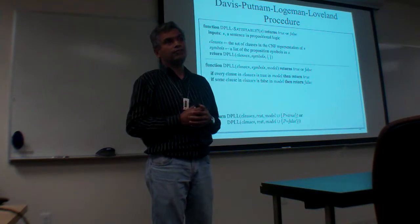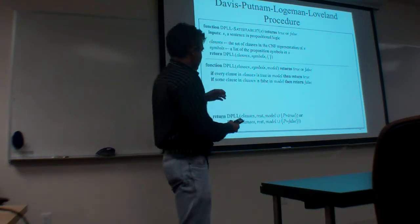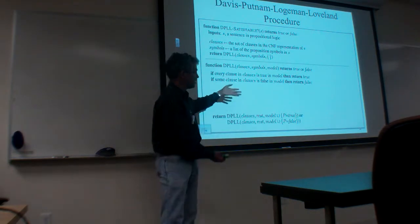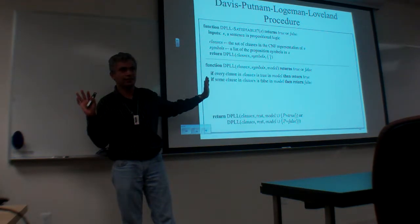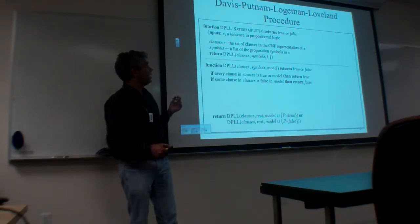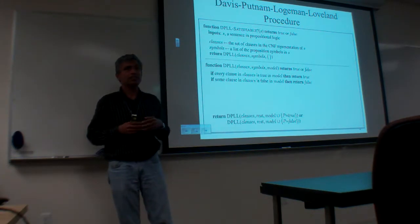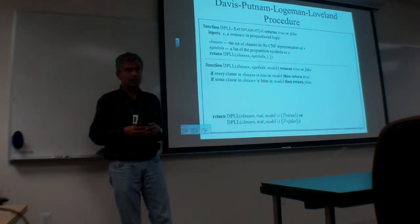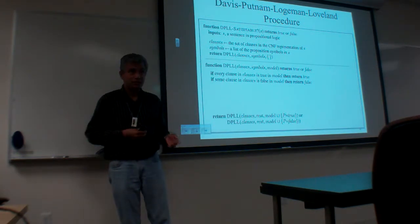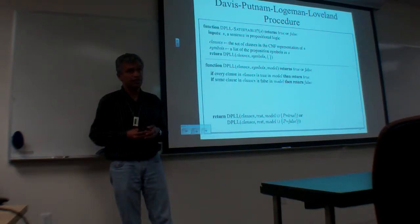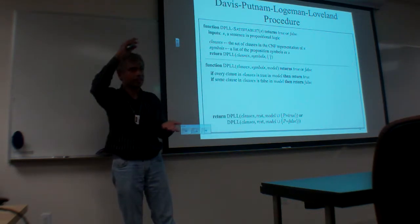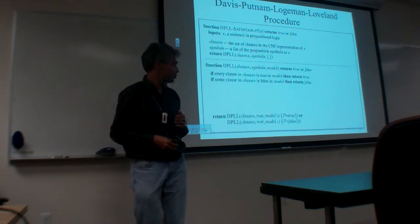That's the algorithm. It's basically in your textbook. This is actually a very famous algorithm — it's called DPLL: the Davis-Putnam-Logemann-Loveland procedure. It's a systematic algorithm, one of the first very efficient algorithms, published in 1962 in JACM, which is like the top journal in computer science.